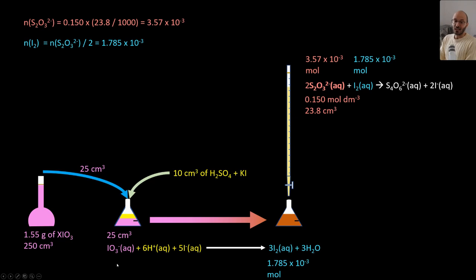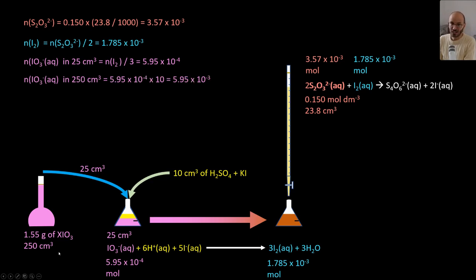So now you can calculate the moles of iodate by dividing by 3. Okay, that's the moles in 25 cm³, so in 250 cm³ you have 10 times more. Perfect.